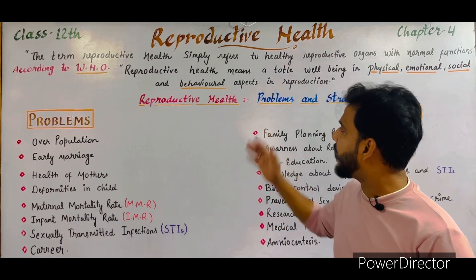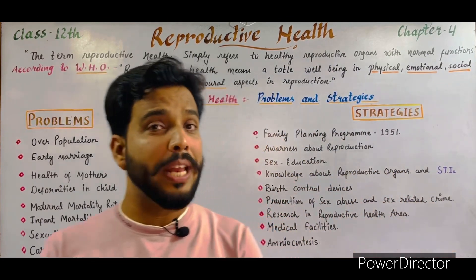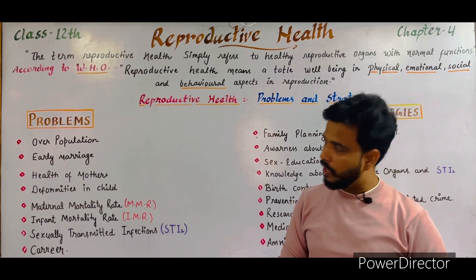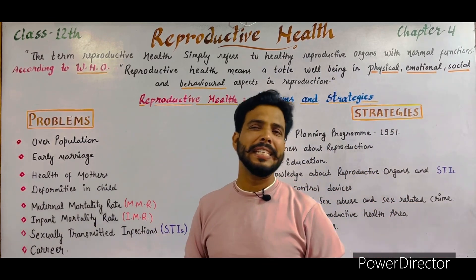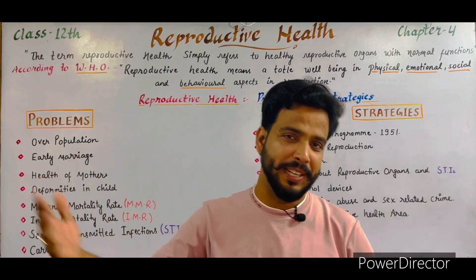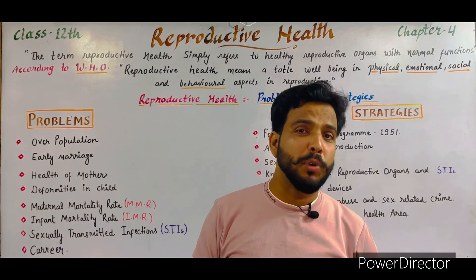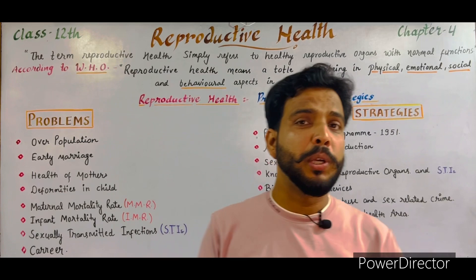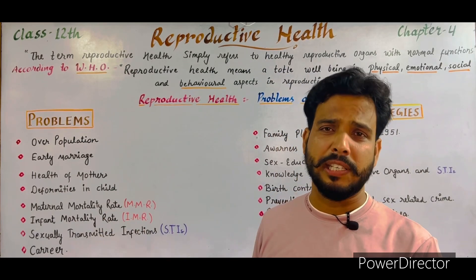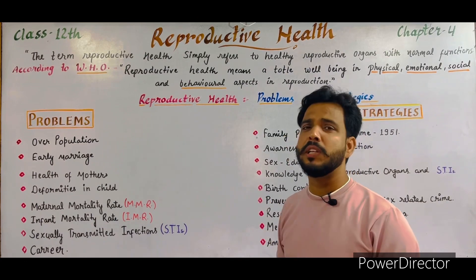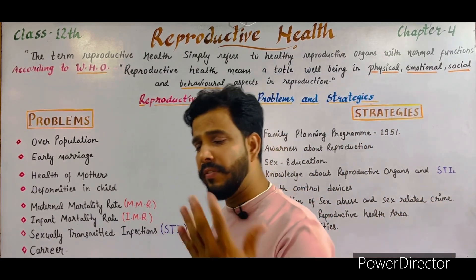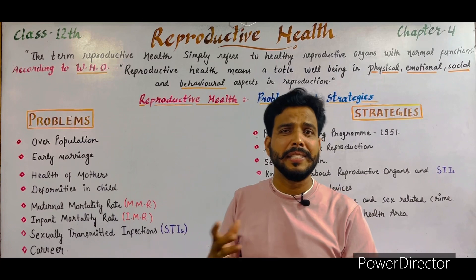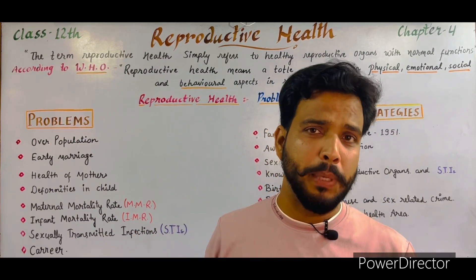Now we will discuss the different kinds of problems and strategies related to reproductive health. The first problem is overpopulation. In India, the population is growing day by day. Because of increased population, proper facilities are not available for everyone, as many people are living in small cities and villages. Overpopulation is a big problem — proper medical facilities are not available to everyone.